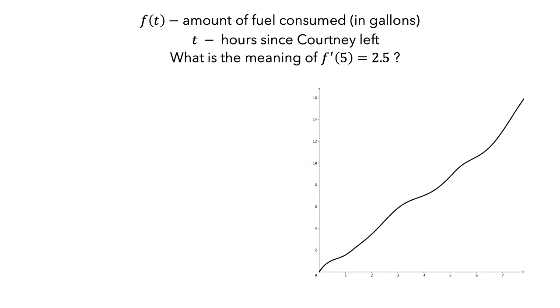For this graph, the horizontal axis would be the time in hours, and the vertical axis would be the amount of fuel consumed in gallons.